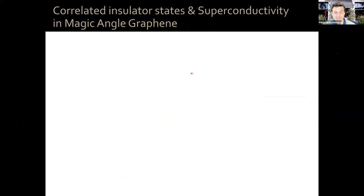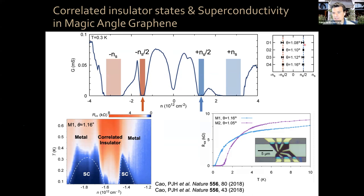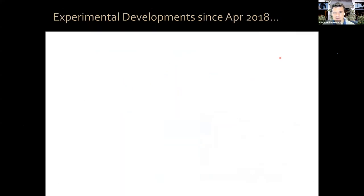What we found back in 2018 is that if you place your chemical potential in these flat bands, you see a series of correlated insulator states at fractional fillings of your moiré superlattice. When you electrostatically dope away from the correlated insulator, you have superconductivity. This happens in a relatively narrow angular distribution around 1.1 degrees. We published the paper — officially in April 2018. So what has happened experimentally since then?